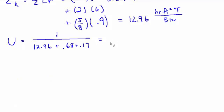And you should get 0.072, and now the units flip. So it's BTU per hour foot squared degrees F. And that is answer A.